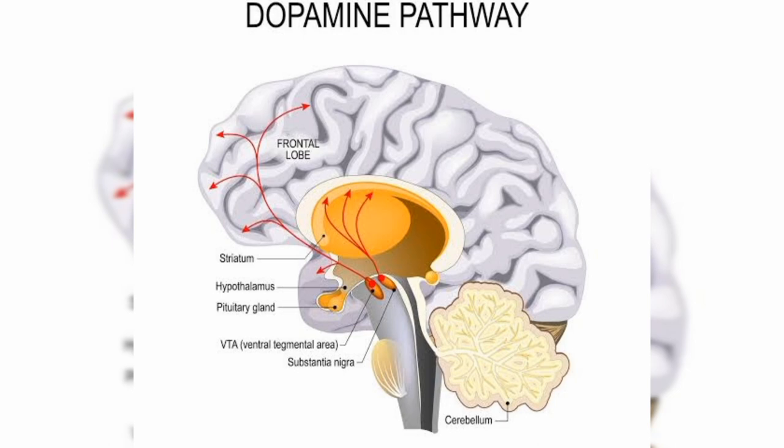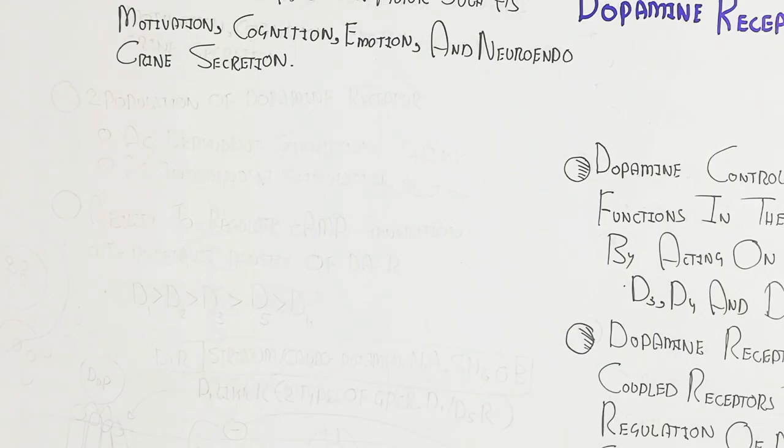This is the dopamine pathway. The VTA, the ventral tegmental area, and substantia nigra will stimulate dopamine targeting the striatum, hypothalamus, pituitary gland, and frontal lobe.